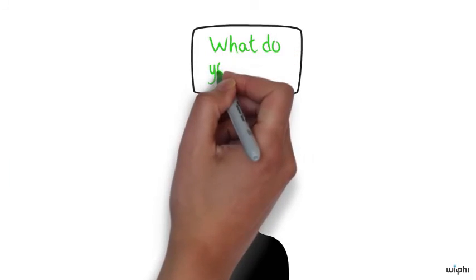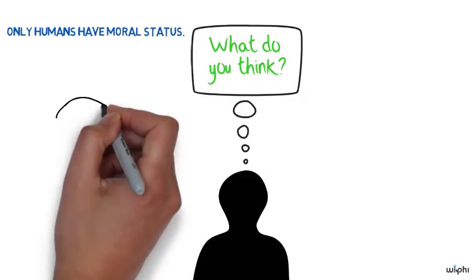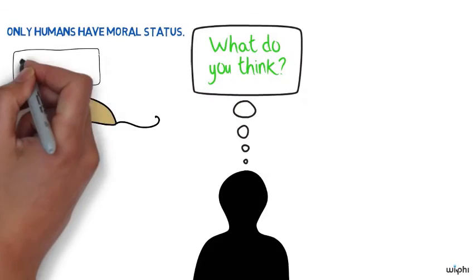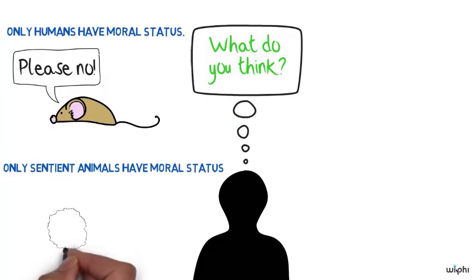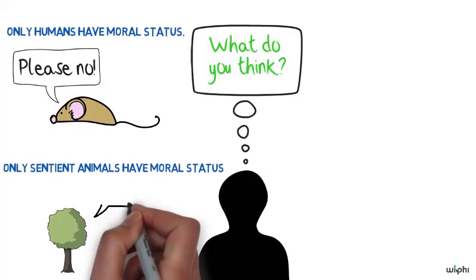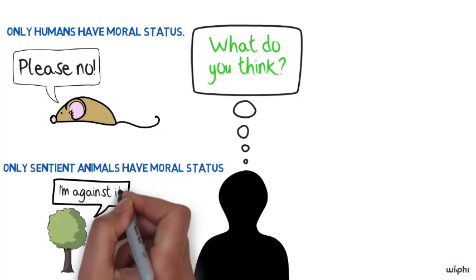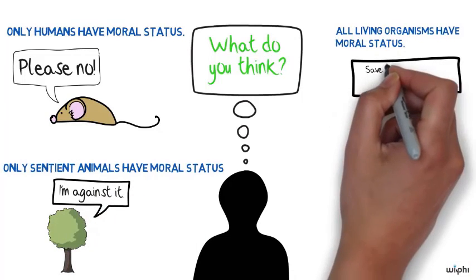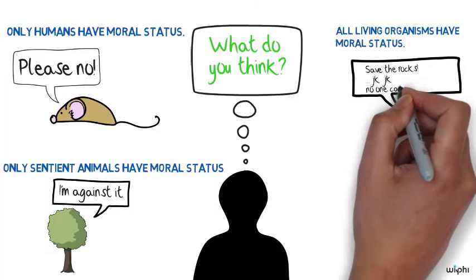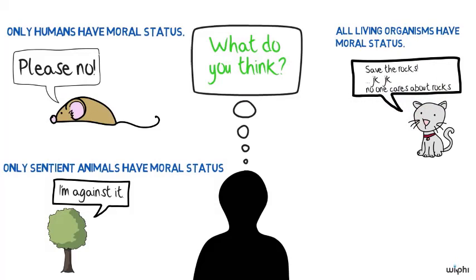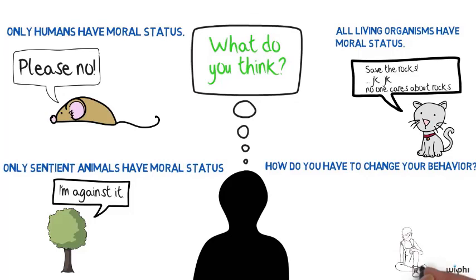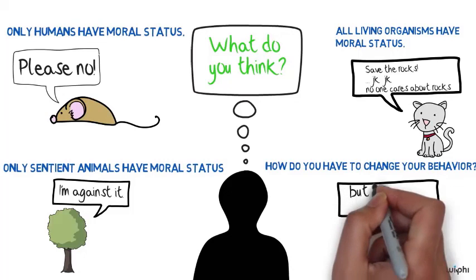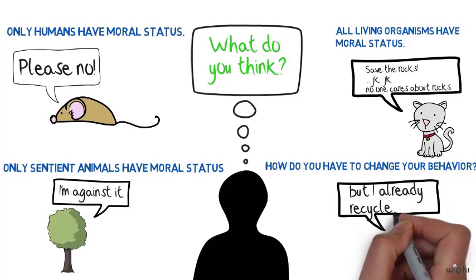So what do you think? Which theory of moral status seems most plausible to you? Do you think that all and only human beings have moral status and we can kick animals down the street if we want to? Do you think that all sentient animals have moral status, so at least we can kick plants down the street if we want to? Or do you think that all living organisms have moral status, so you can kick rocks but pretty much nothing else down the street? And finally and most importantly, how would you have to change your everyday behavior based on which of these theories of moral status you accept?